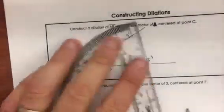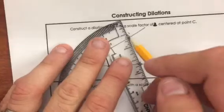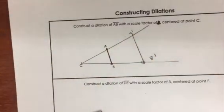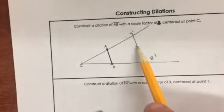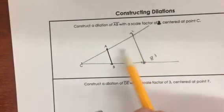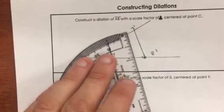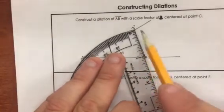And so now we connect A to B and sure enough, that is our dilation. So AB prime, which is the image, should be twice as long as AB. And if you look here, if that's five, this should be about ten. And sure enough, if you look, that's ten—twice as long. It worked!